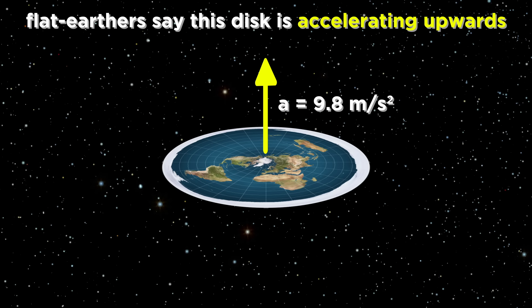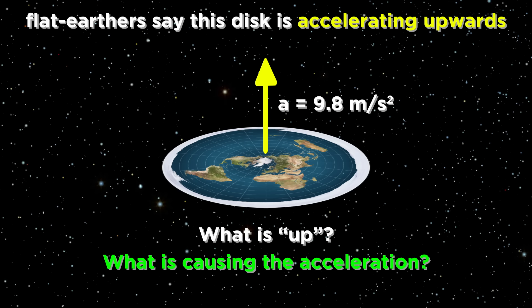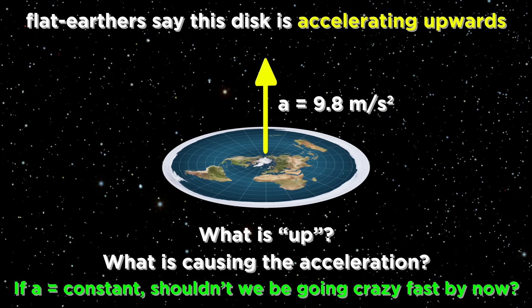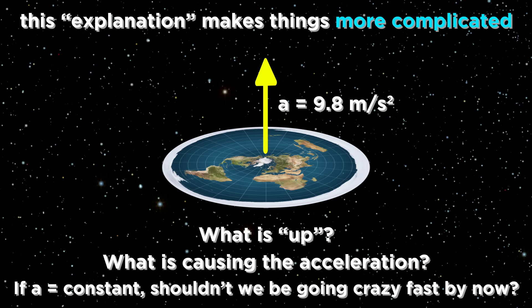Ad hoc solutions are offered, like the idea that the flat earth is accelerating upwards with an acceleration of 9.8 meters per second squared, and that's why we all stick to the ground. But this doesn't help, it actually makes things worse. What is up? What is causing the acceleration? If it is constantly accelerating, we should be traveling the speed of light by now. What is meant to be a simple explanation actually complicates things so much further.